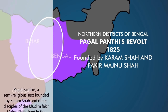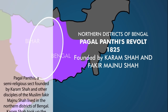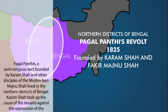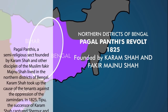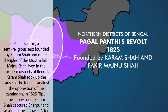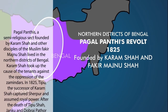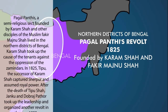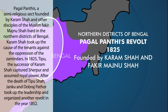The Pagalpantis, a semi-religious sect founded by Karam Shah and other disciples of the Muslim fakir Majnu Shah, lived in the northern districts of Bengal. Karam Shah took up the cause of the tenants against the oppression of the Zamindars. In 1825, Tipu, the successor of Karam Shah, captured Sherpur and assumed royal power. After the death of Tipu Shah, Janku and Dobraj Pathor took up the leadership and organized another revolt in the year 1852.